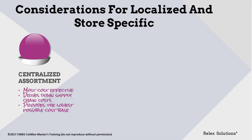Centralized assortment, or carrying the same range of products in every store, is an important driver of sourcing and supply chain economics. This approach is also effective at driving down supply chain costs. For example, having five variants of what is essentially the same product can more than double distribution center inventory due to the extra safety stock needed to ensure availability for distribution.